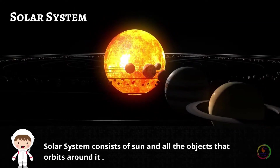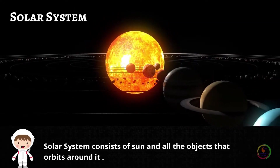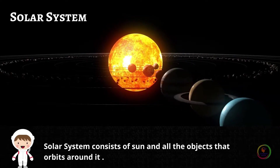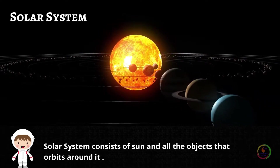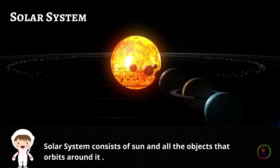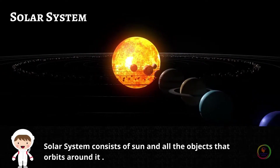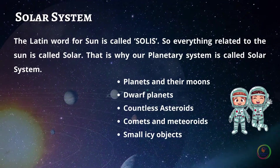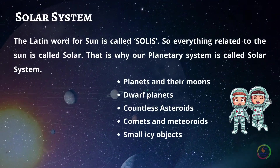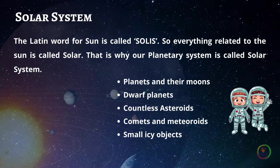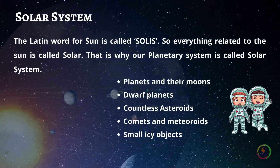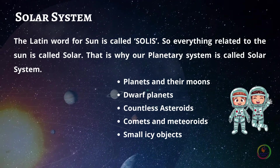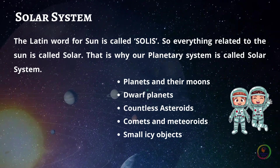Solar System. Solar System consists of the sun and all the objects that orbit around it. The Latin word for sun is called 'solace', so everything related to the sun is called solar.